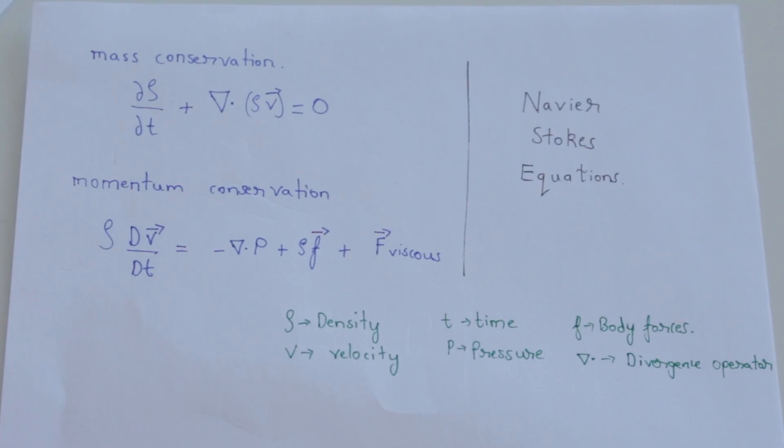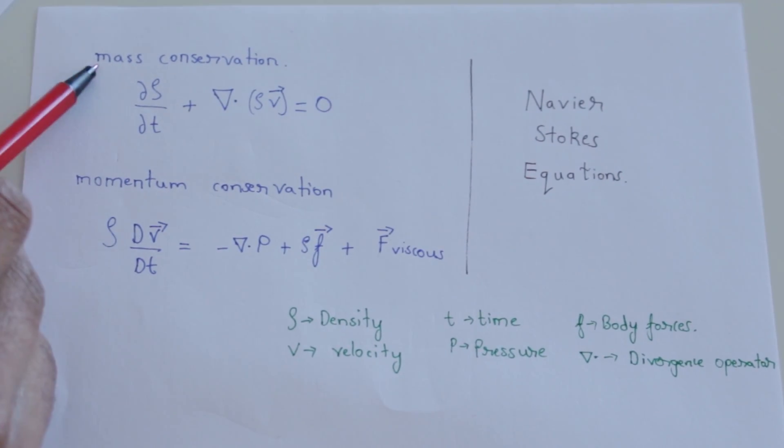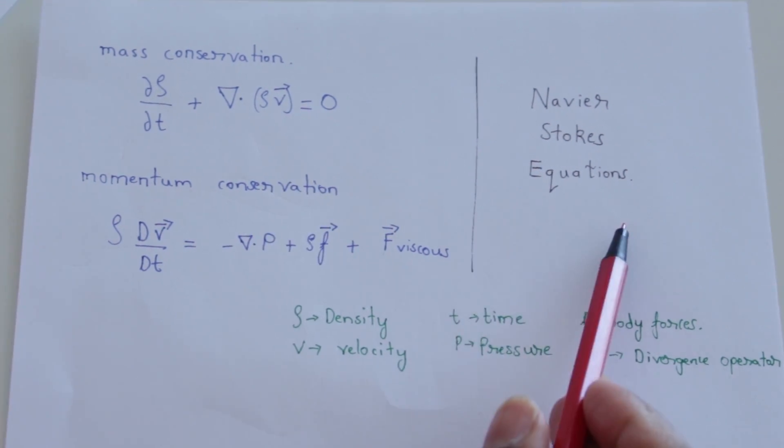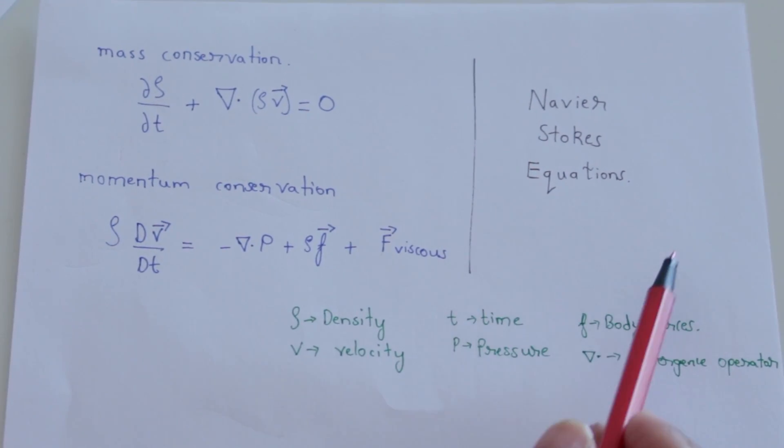We have now talked about the conservation of mass and momentum. But there is still a third principle, which is the conservation of energy. The equation for the conservation of energy is very similar to that of mass, but it also has a separate variable of temperature. And we only solve it in cases where we expect the density and temperature of the fluid flow to change. Both the mass and the momentum equations together are called the Navier-Stokes equation that describe any type of fluid flow.